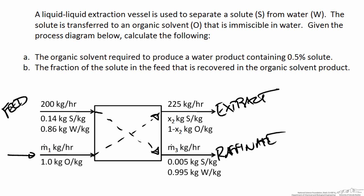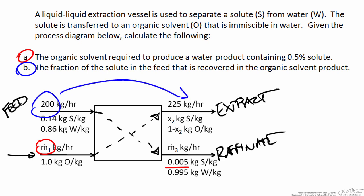Given our process diagram, we're asked to calculate two things. First, we want to find the amount of organic solvent required to produce a water product containing 0.5% solute — that's indicated by the mass fraction of 0.005 in the raffinate — and we want to find M1. Second, we want to find the fraction of the solute in the feed that's recovered in the organic solvent product, which is the extract. To do that, we're going to have to find a value for x2.